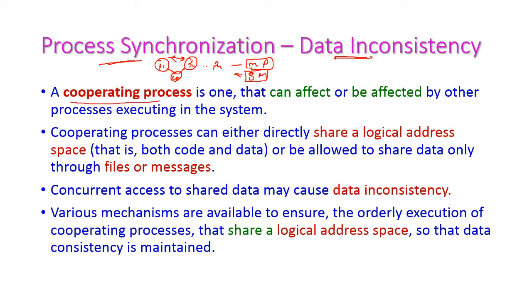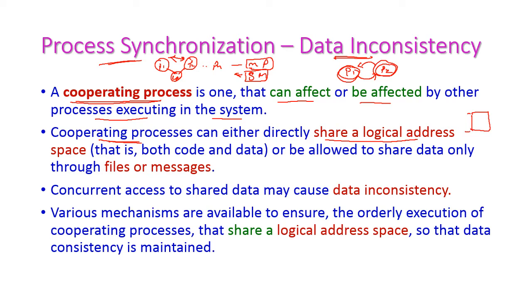Here, cooperating processes are those where a process can affect or be affected by other processes executing in the system. For example, P1 and P2 are cooperating processes — P1 may be affected by P2 or P2 may be affected by P1. Cooperating processes may either directly share a logical address space — that is, both code and data — or be allowed to share data only through files or messages.